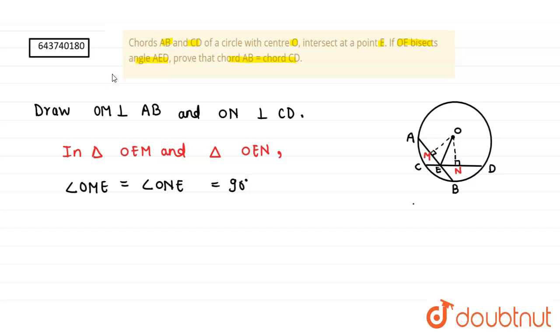And second, angle OEM is equals to angle OEN because OE bisects angle AED. And the third condition is that OE is equals to OE because the side is common.